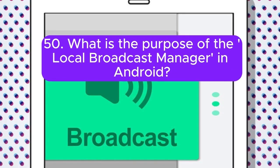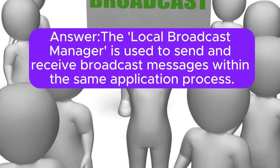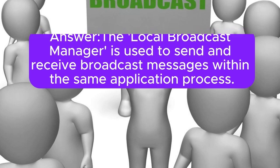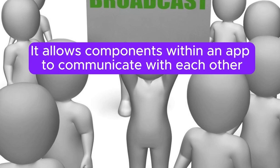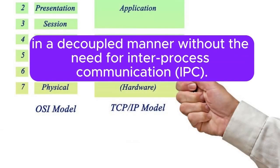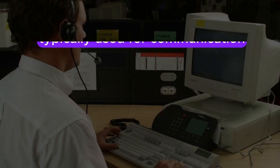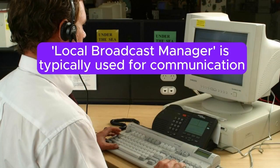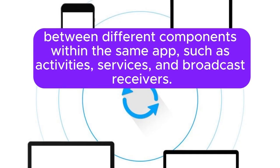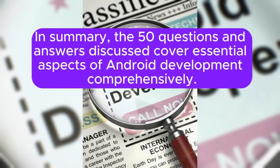Question 50: What is the purpose of the LocalBroadcastManager in Android? The LocalBroadcastManager is used to send and receive broadcast messages within the same application process. It allows components within an app to communicate with each other in a decoupled manner without the need for inter-process communication (IPC). LocalBroadcastManager is typically used for communication between different components within the same app, such as activities, services, and broadcast receivers.